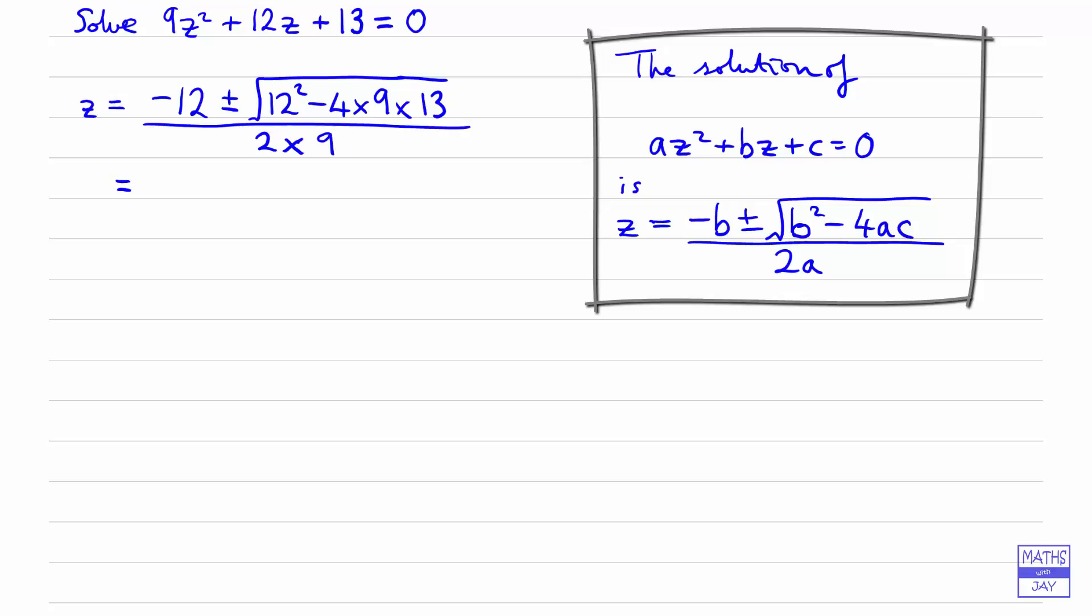So that will give us minus 12 plus or minus. If we work that out, we're going to get the square root of minus 324, and that's all over 18.